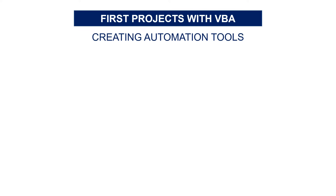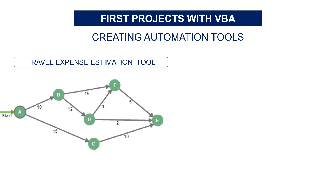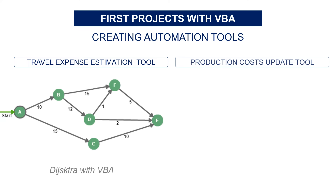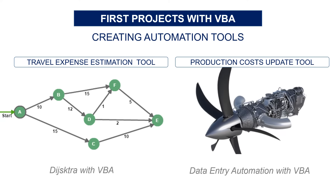I became 'Mr. Automation' in all the internships I did after. The following internship was in the training center of a major French bank, where I used VBA to build a tool that estimates travel expenses using a pathfinding algorithm — it helped the company save 100,000 euros. Later, I was in charge of production cost analysis for a major aircraft engine manufacturer, where I used VBA to automate manual data entry tasks for database updates and the computation of production costs for 1,000 parts.